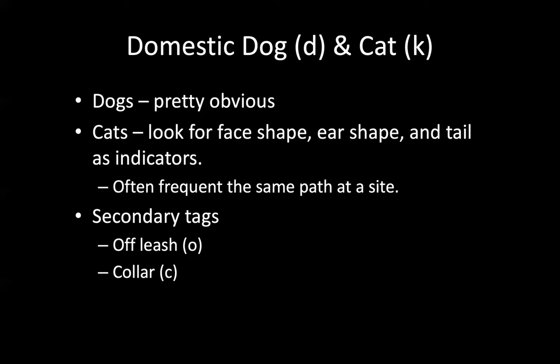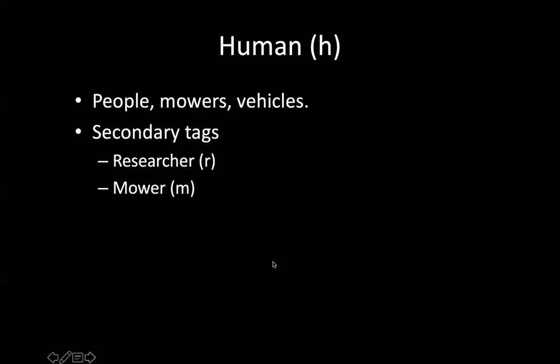There's a way to add multiple detections of multiple species in one photo. Humans are another tag — we keep track of people walking through sites, researchers maintaining sites, and vehicles, which we typically tag as human. We take a picture of ourselves every time we're interacting with a site. That's helpful because sometimes cameras malfunction and reset to a wrong date — if we have pictures of ourselves and write down deployment/check times, we can back-calculate and correct those times. We always mark human researcher, and also mowers, because you'll get 30-50 photos of someone going back and forth.